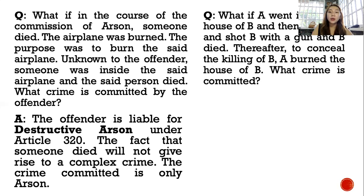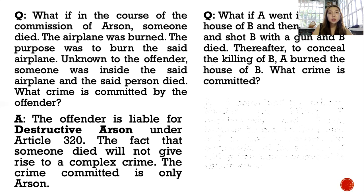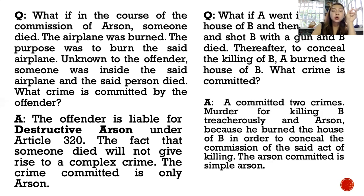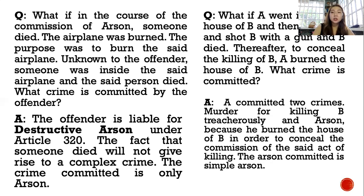Another problem: A went inside the house of B, saw B, shot B with a gun, and B died. Thereafter, to conceal the killing, A burned the house of B. What crime is committed? A committed two crimes: first, murder, for killing B treacherously; and second, arson, because he burned the house of B in order to conceal the commission of the killing. The arson committed is simple arson.